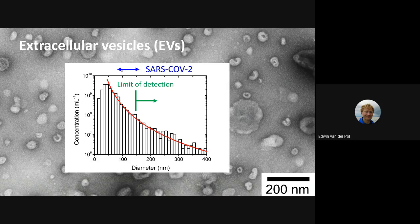Here I marked the approximate diameter range of SARS-CoV-2. From some articles, it is somewhere between 60 to 80 nanometers or 260 nanometers. We can detect a part of that. The limit of detection for SARS-CoV-2 is lower, so this is basically a wrong diagram.